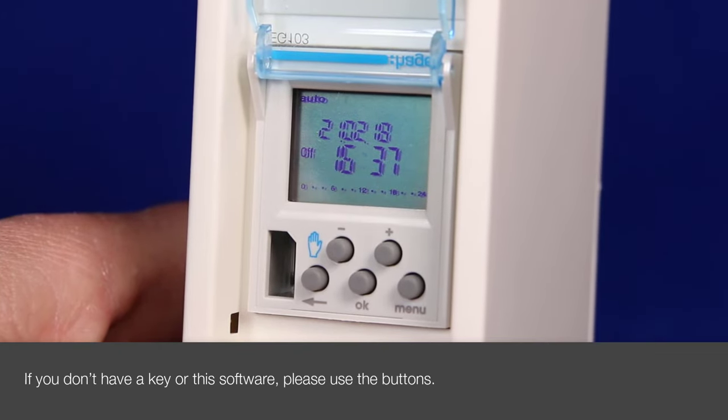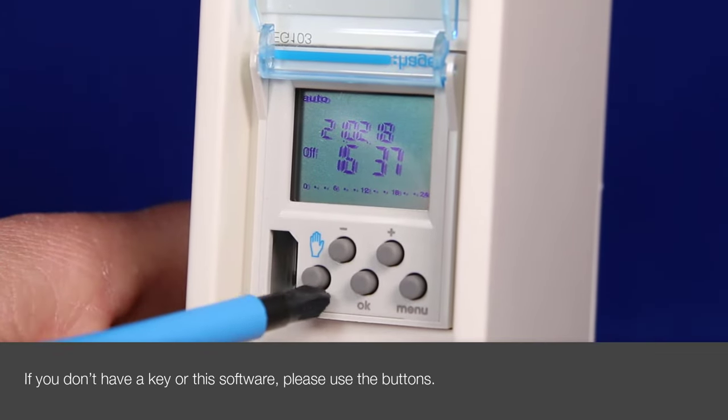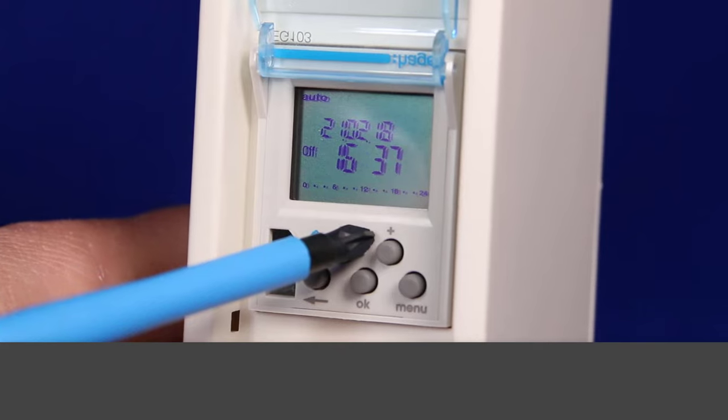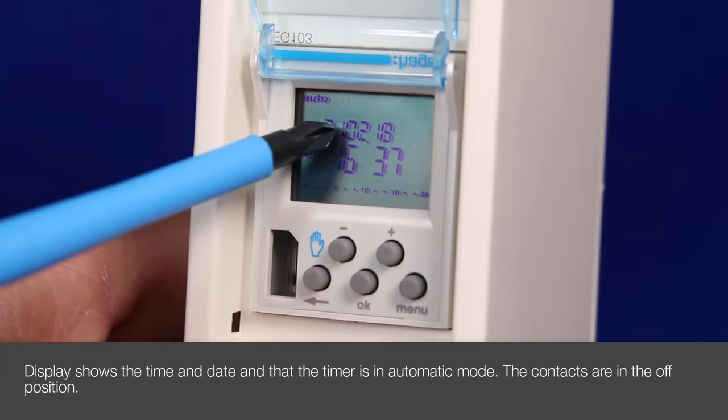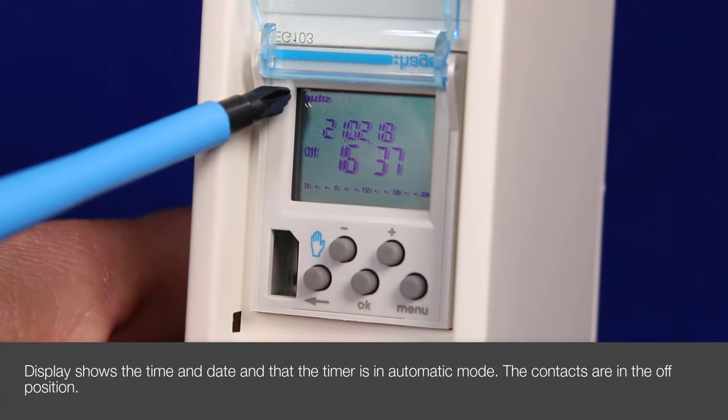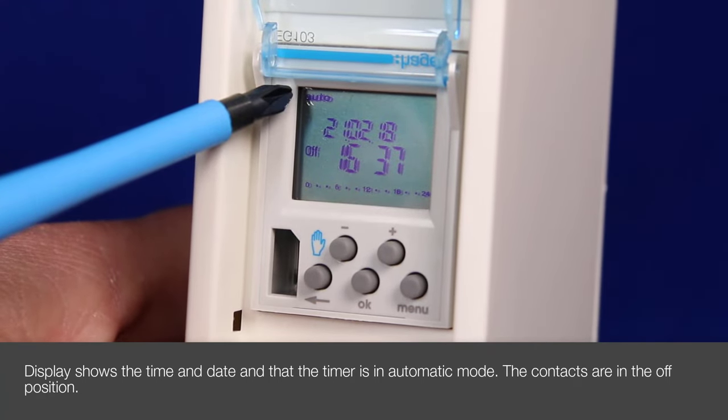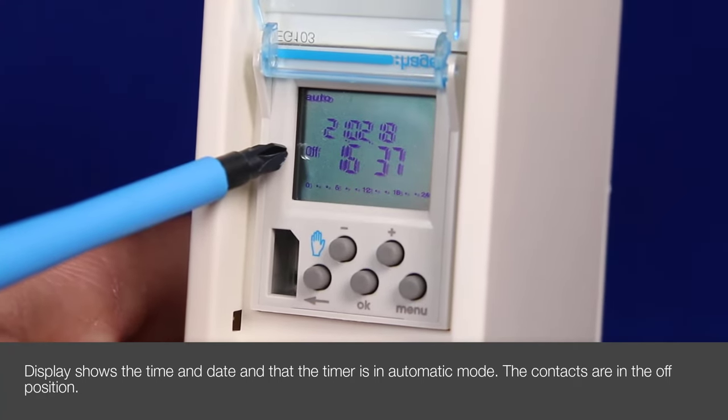If you don't have a key or this software however, you will need to use the buttons on the front of the timer. The display is telling us at present the current time and date and also that it is in automatic mode. The contacts you can see are also in the off position.